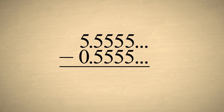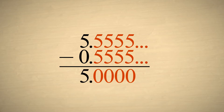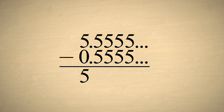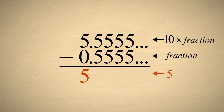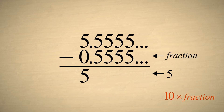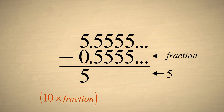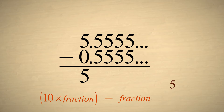Since both numbers in this example have an infinite number of repeating fives, this eliminates all the repeating fives after the decimal point. We know that our original decimal number is equal to some fraction, but we don't yet know what that fraction is. However, we do know that when it is subtracted from ten times itself, we get five.